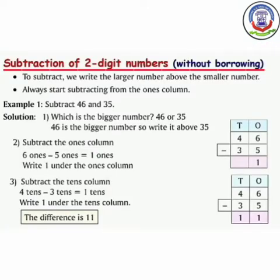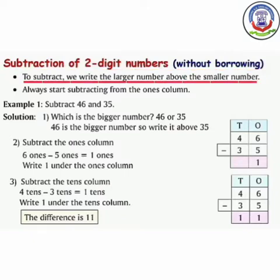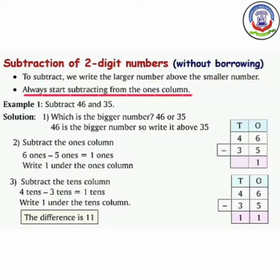Subtraction of two-digit numbers without borrowing. To subtract, we write the larger number above the smaller number. जब भी हम subtract करते हैं, तो हम पहले बड़ा नंबर लिखते हैं, फिर छोटा नंबर लिखते हैं. Always start subtracting from the ones column. जब भी हम subtract करना start करते हैं, तो हमें ones column से start करना चाहिए.